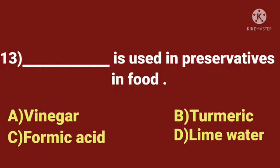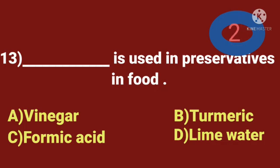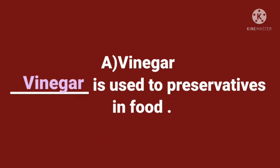Thirteenth question. Dash is used as a preservative in food. A. Vinegar. B. Turmeric. C. Formic acid. D. Lime water. Time starts now. And the answer is vinegar. Vinegar is used as a preservative in food.